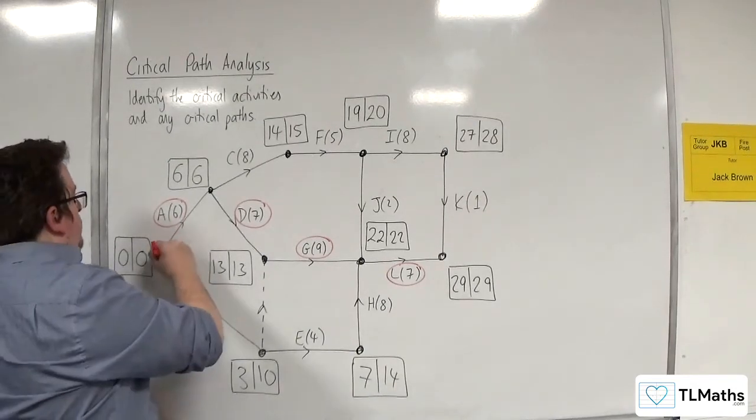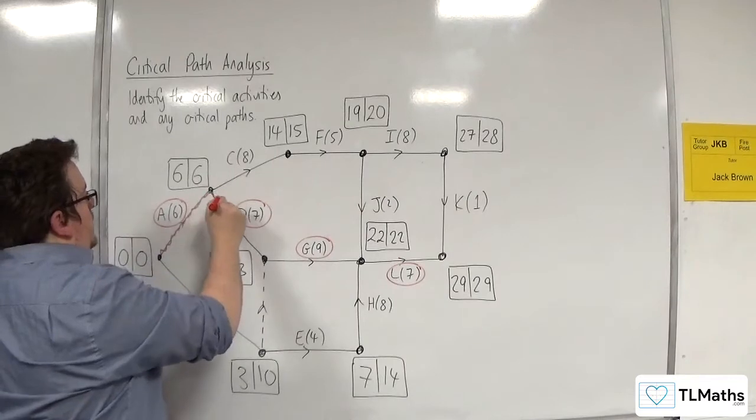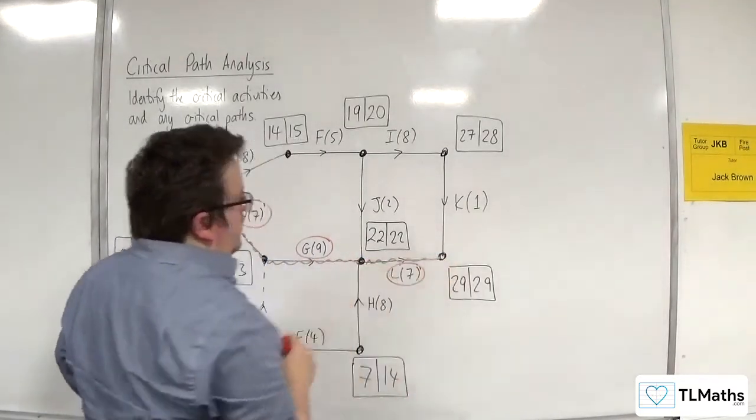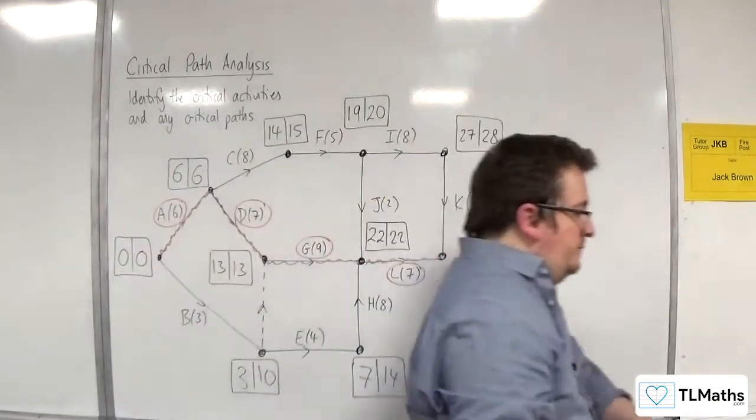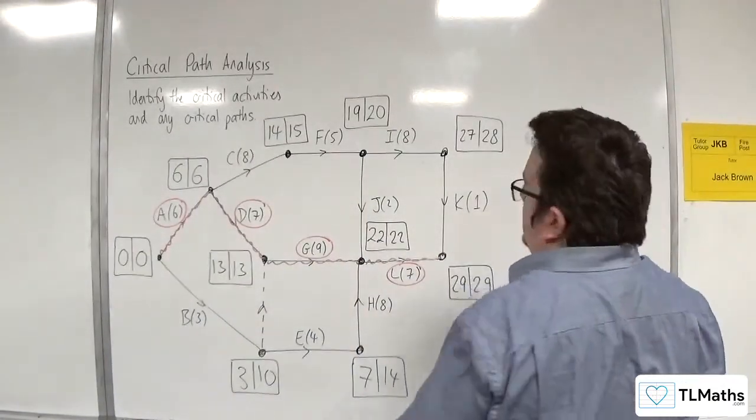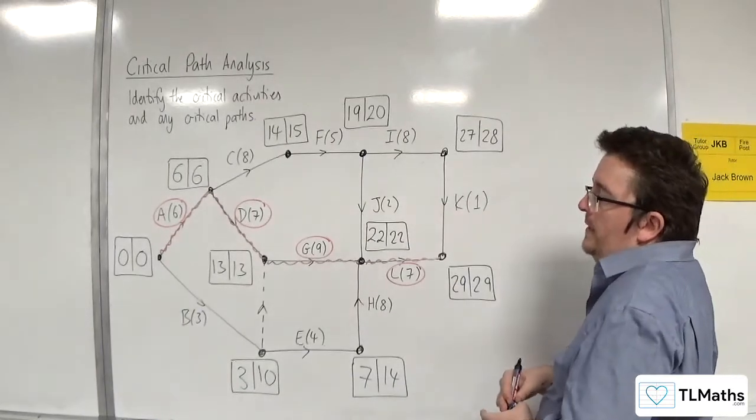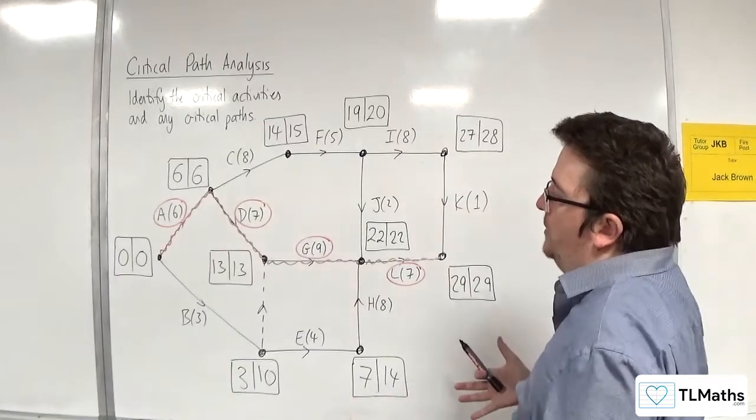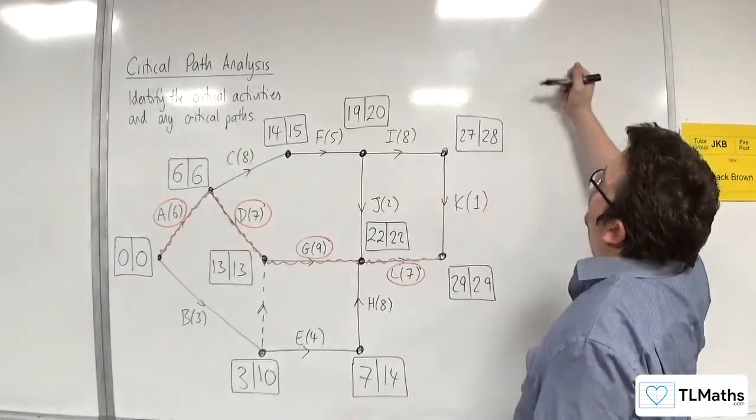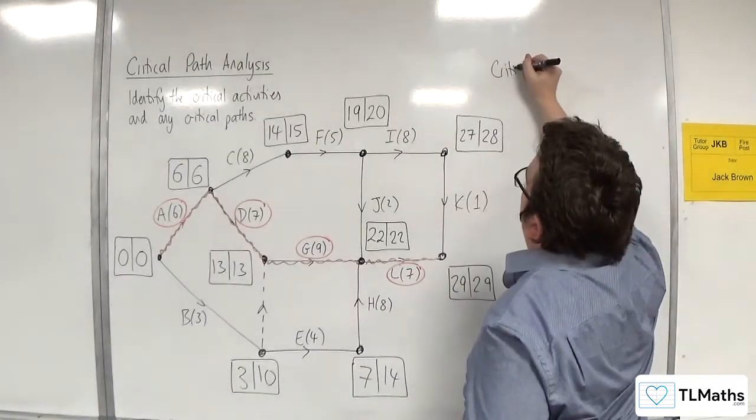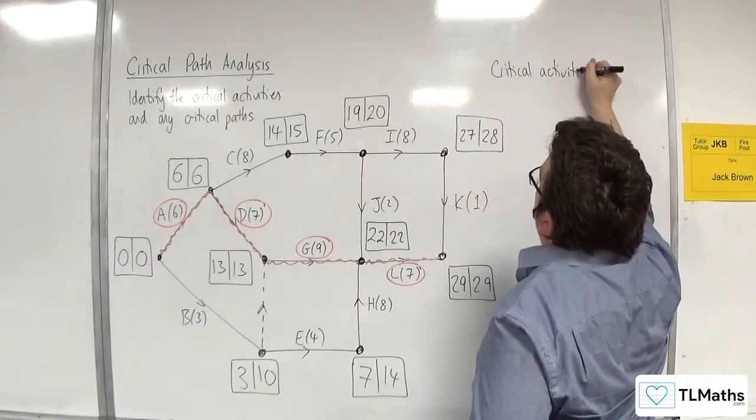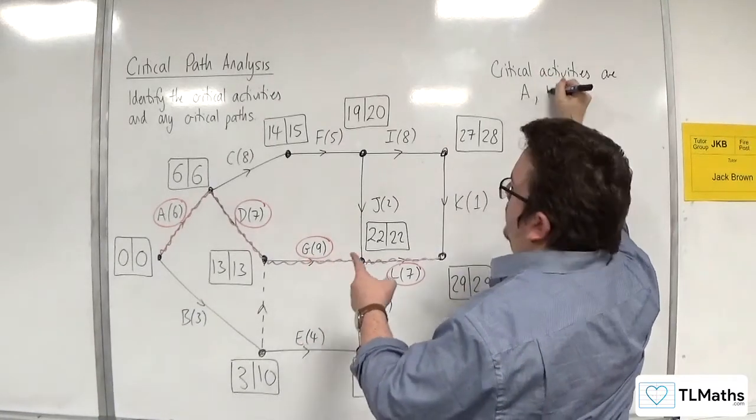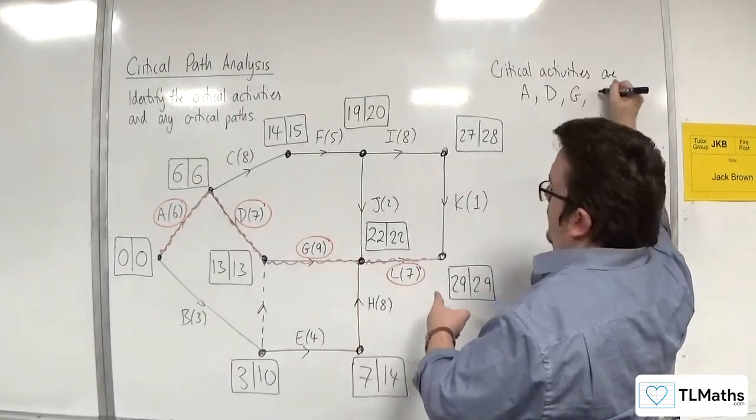And what you should see is that your critical activities form a critical path through your network. So essentially, those activities have to be completed on time. Otherwise, the whole project overruns. So the critical activities are A, D, G, and L.